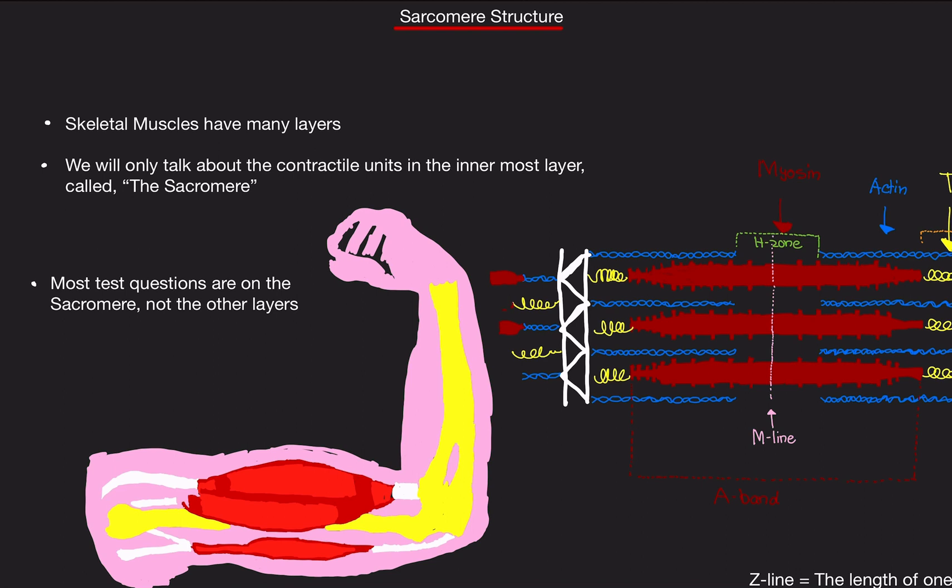Now to note, in physiology exams, most questions are on the sarcomere, not on the actual layers of the muscle. The layers of the muscle are usually like anatomy questions. Since this is physiology, most of the questions are directed on the sarcomere.